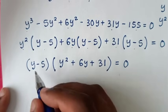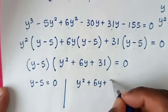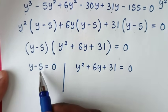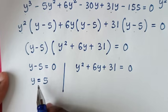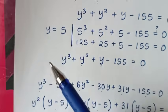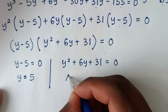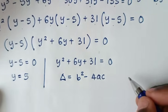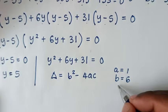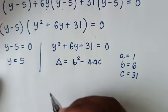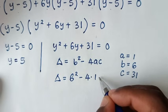Now from here we have two solutions: the first solution is y minus 5 equal to 0, and the second solution is y squared plus 6y plus 31 equal to 0. From the first solution, taking minus 5 to the other side gives y equal to 5. This is the first value of y in this problem. Now to check if the second equation gives a real solution, we use the discriminant formula: discriminant equals b squared minus 4ac, where a equals the coefficient of y squared which is 1, b equals the coefficient of y which is 6, and c equals the constant which is 31.